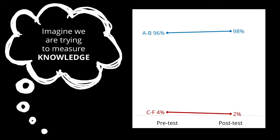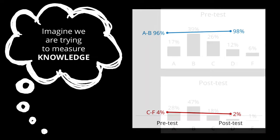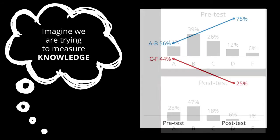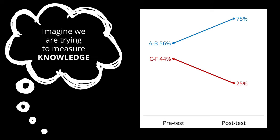To fix this problem, we would create an instrument that is better at separating groups of people that are different from each other — we would make the test a little more difficult. If we did that, we would end up with a pre-test and post-test graph that looks more like a normal curve. That way, when we compare pre-test A's and B's to post-test A's and B's, we can see to what degree our program made a difference, and in the future, we can see to what degree any changes made a difference.